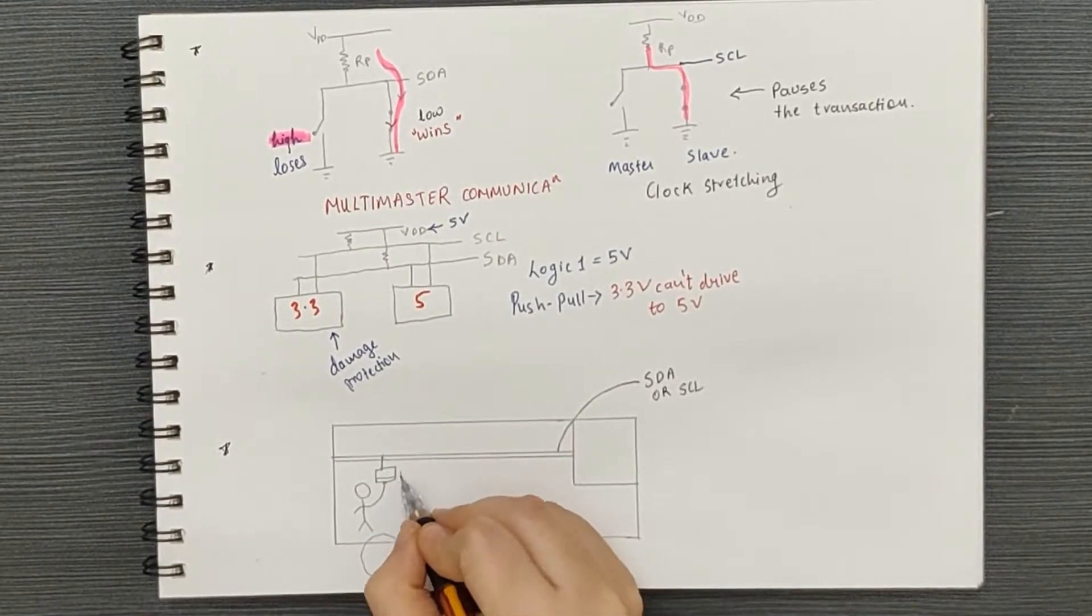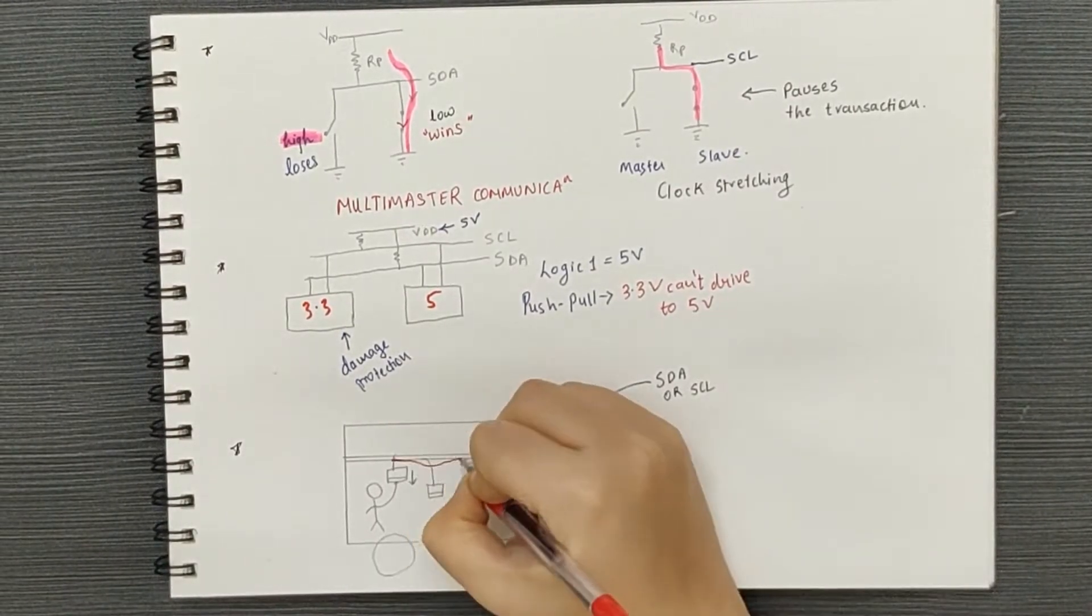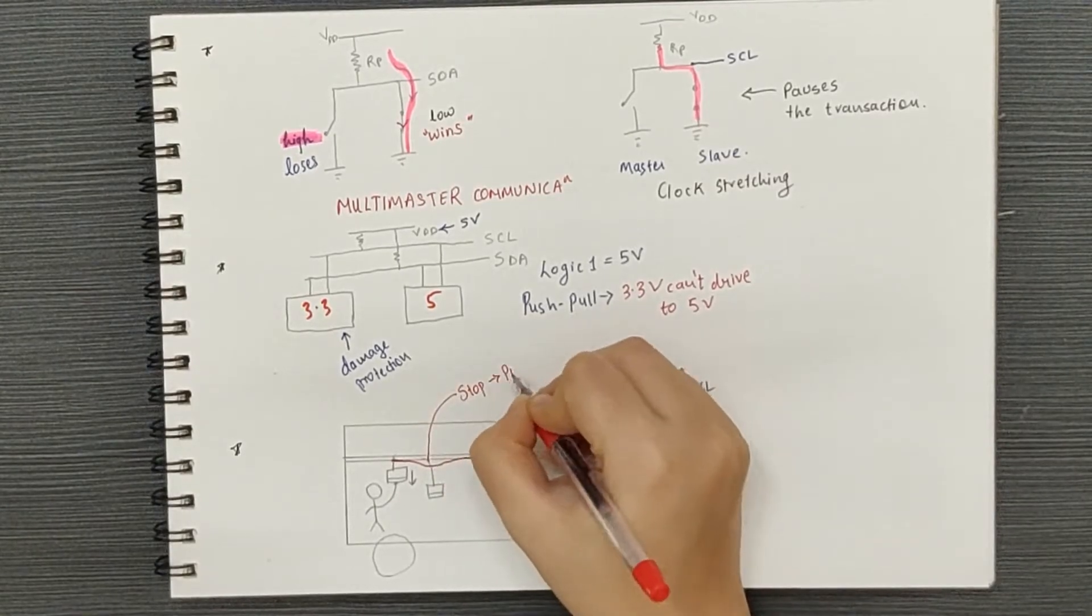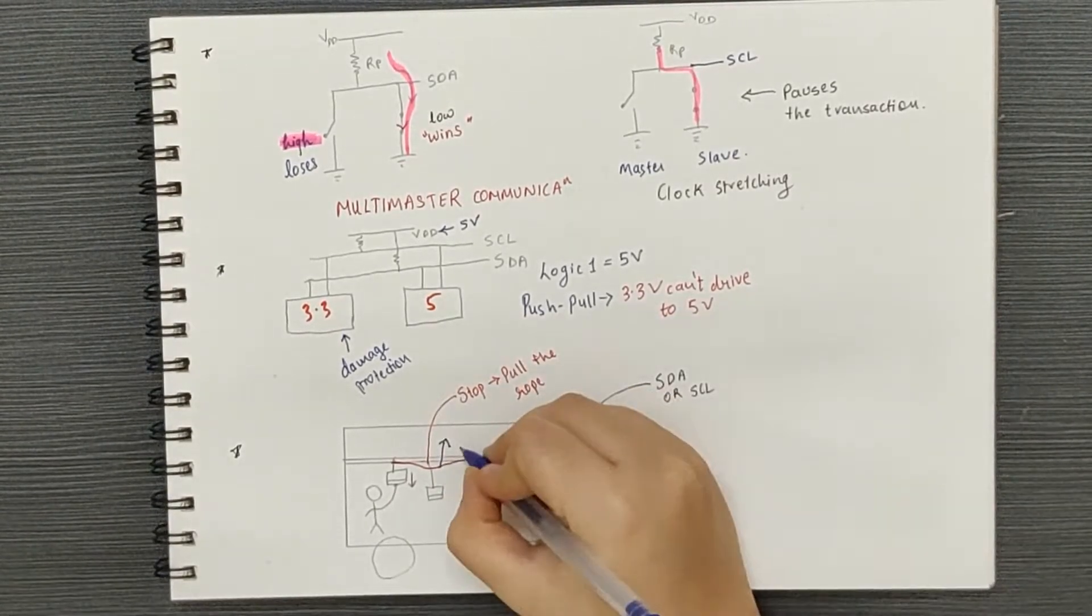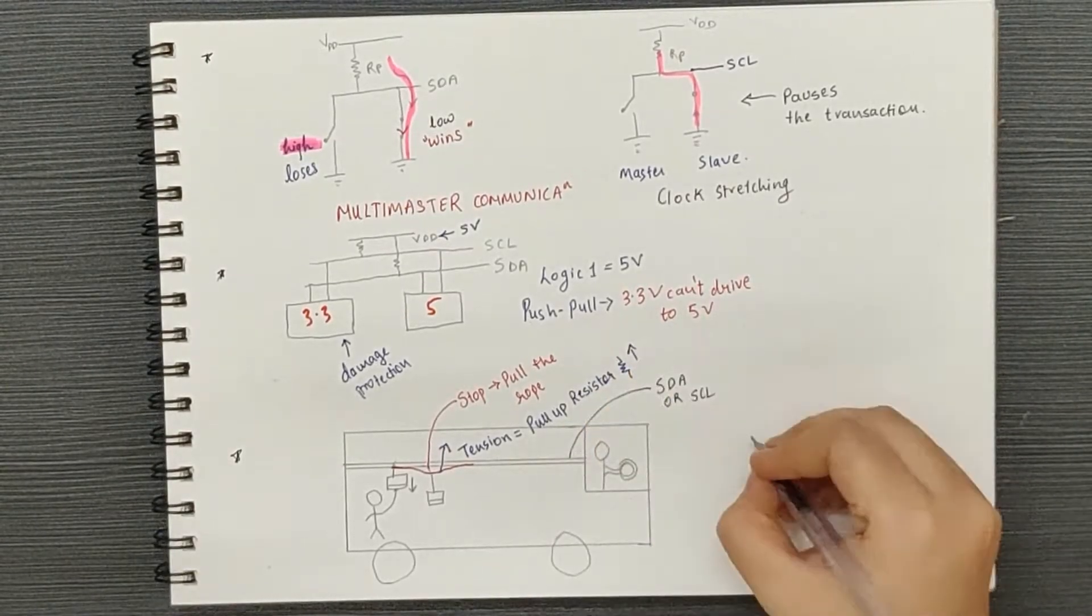They can signal the driver to stop the bus by yanking or by pulling down the rope and the tension in the rope acts like the pull-up resistor which pulls it back up after it is released by the device.